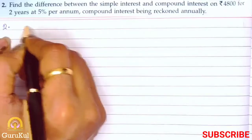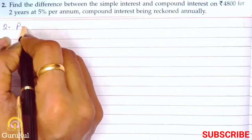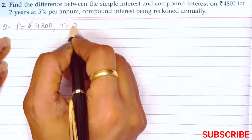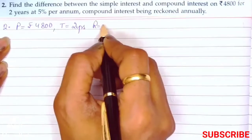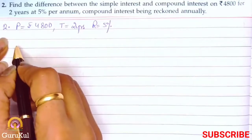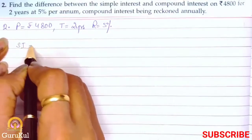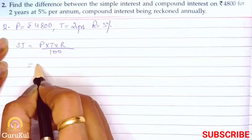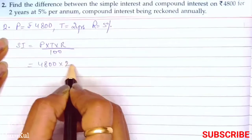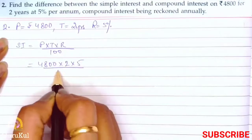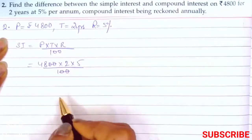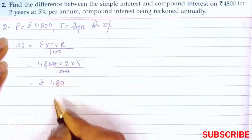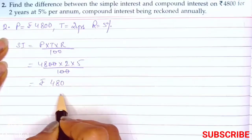So first let us write down the details. Principle is Rs.4800, time is 2 years and rate is 5%. First we find simple interest. Formula is P into T into R by 100. So 4800 into 2 into 5 by 100. Equal number of zeros got cancelled. So 48 into 10 gives us the amount of Rs.480. So here we got our simple interest.